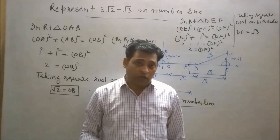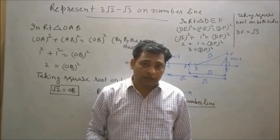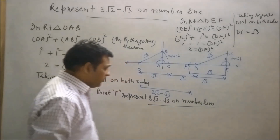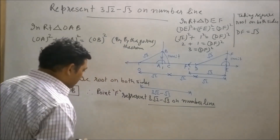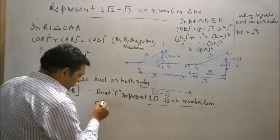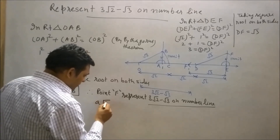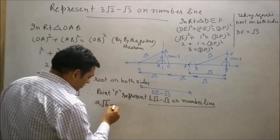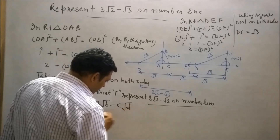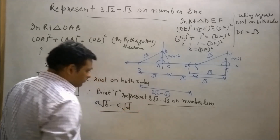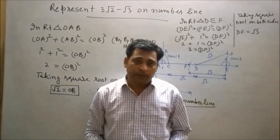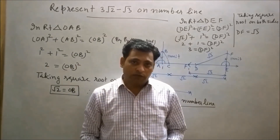So students, with the help of this geometrical construction of 3√2 minus √3, we can represent any irrational number which is in the form of a√b minus c√d. Keep watching my videos and keep practicing. Thank you, take care.